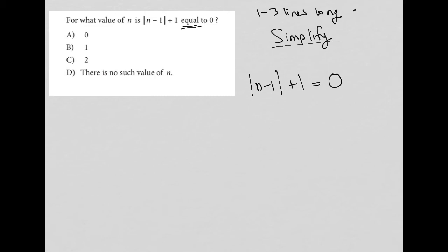So to simplify an absolute value question, you want to isolate the absolute value. So I'm going to have |n-1|, I'm going to subtract one from both sides, and I'm going to end up with equals negative one.